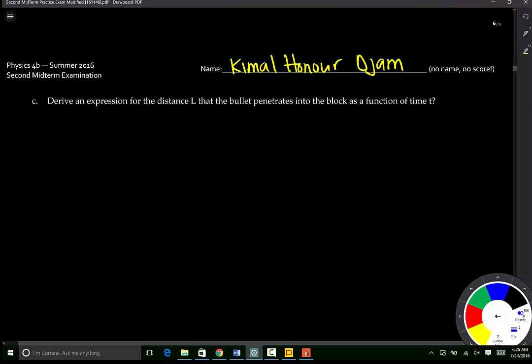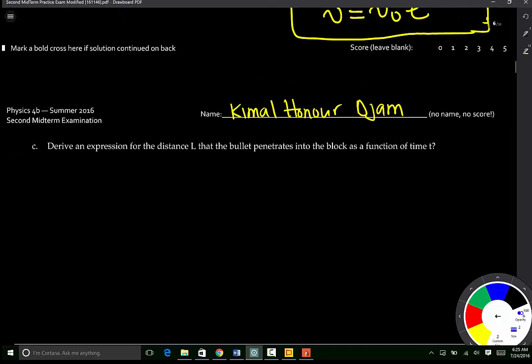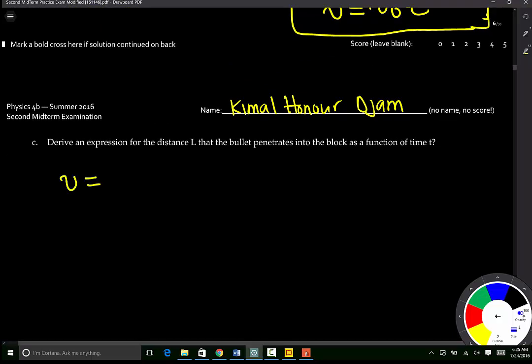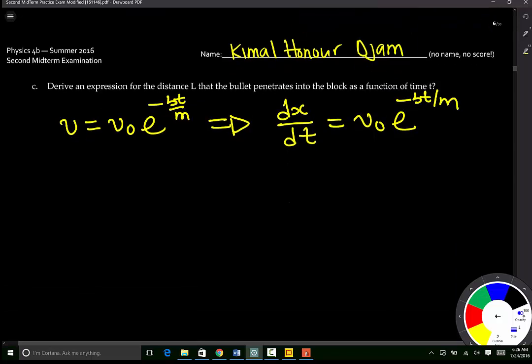The next part of the question says that we need to derive an expression for the distance L that the bullet penetrates into the block as a function of time. We know that v is equal to v0 e to the negative Bt over M, which basically means that dx all divided by dt is equal to v0 e negative Bt over M. Hence, dx is equal to v0 e negative Bt over M dt.